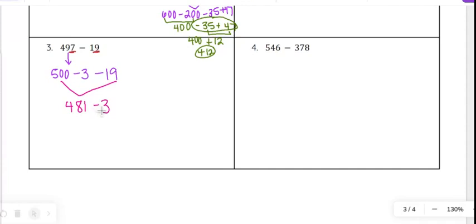And so when I do 481 minus 3, a couple ways I might think of that. So 481, if I just count backwards, 480, 479, 478. And so 478 would be my answer.